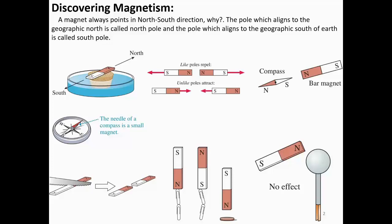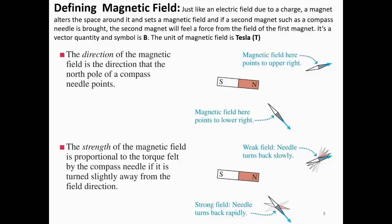In classical magnetism, magnets always point in the north and south geographical direction, and there's a reason for that. People used to use this idea — using a compass needle, which is a tiny magnet — for navigation for a long period of time, because the magnet always points north and south. So defining a magnetic field: just like an electric field, if you have a magnet you have magnetic fields around it.